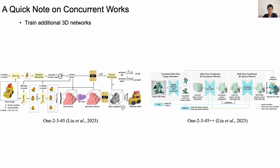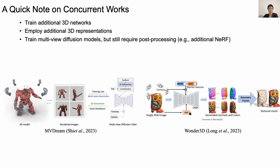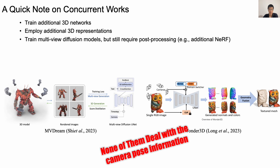To generate consistent novel views, some concurrent works have been proposed. The first idea is to train additional 3D networks using outputs of Zero-123, such as 1-2-3-45 and 1-2-3-45++. The second strategy is to employ additional 3D representations into the diffusion network, like SyncDreamer and consistent networks. Some works also train multiple diffusion models, but they still require post-processing — for example, EscherNet trains on fixed novel views, then uses other 3D networks. Wonder3D tries to output different representations instead of RGB output but still needs post-processing to get a textured mesh. However, none of them properly handle camera pose information.